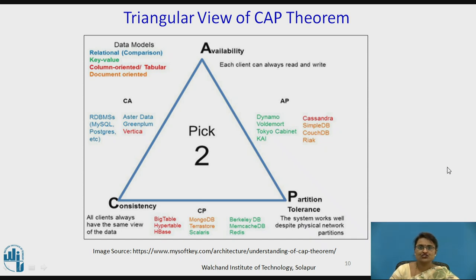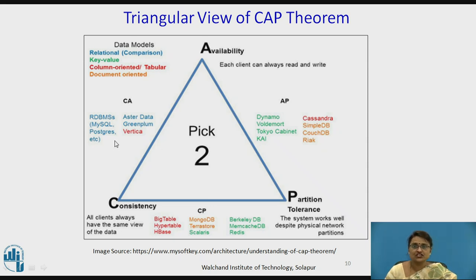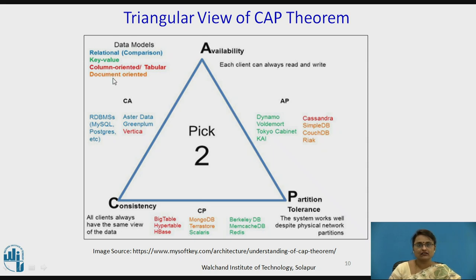The same CAP Theorem is shown in a triangular view. The three points of the triangle represent Consistency, Partition Tolerance, and Availability. The edge between Consistency and Availability represents the CA combination, the edge between Availability and Partition Tolerance represents AP, and similarly for CP. The data models supporting each combination are shown — key-value and others — as compared to relational.